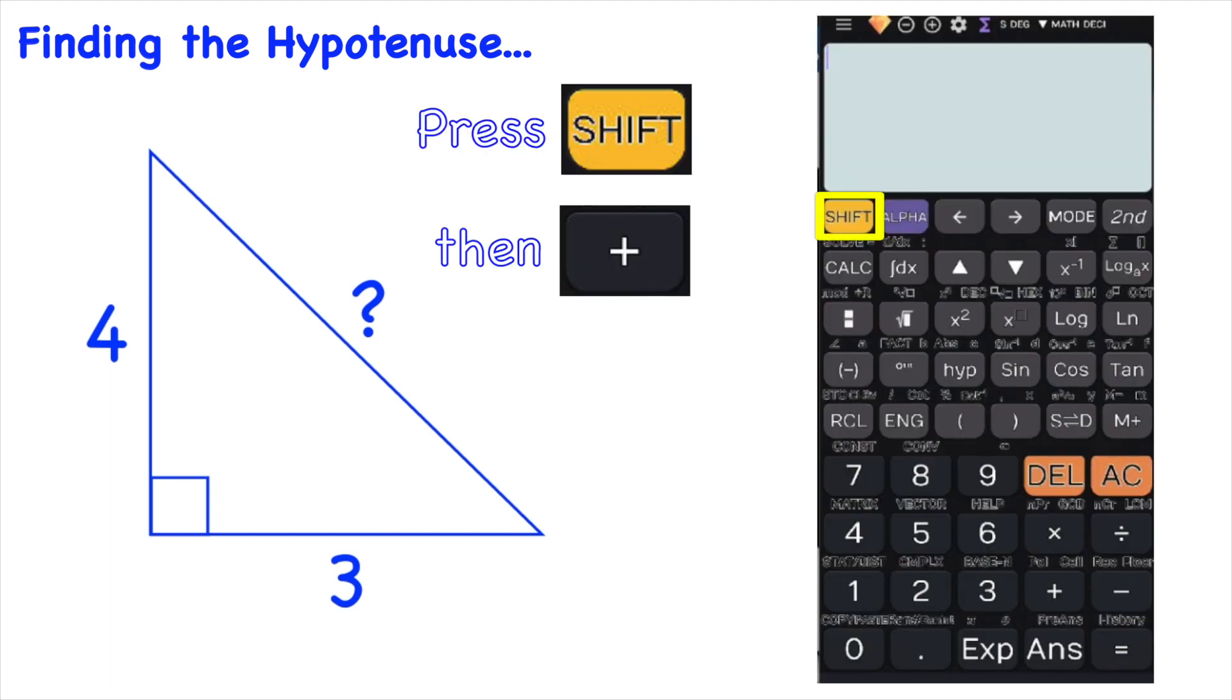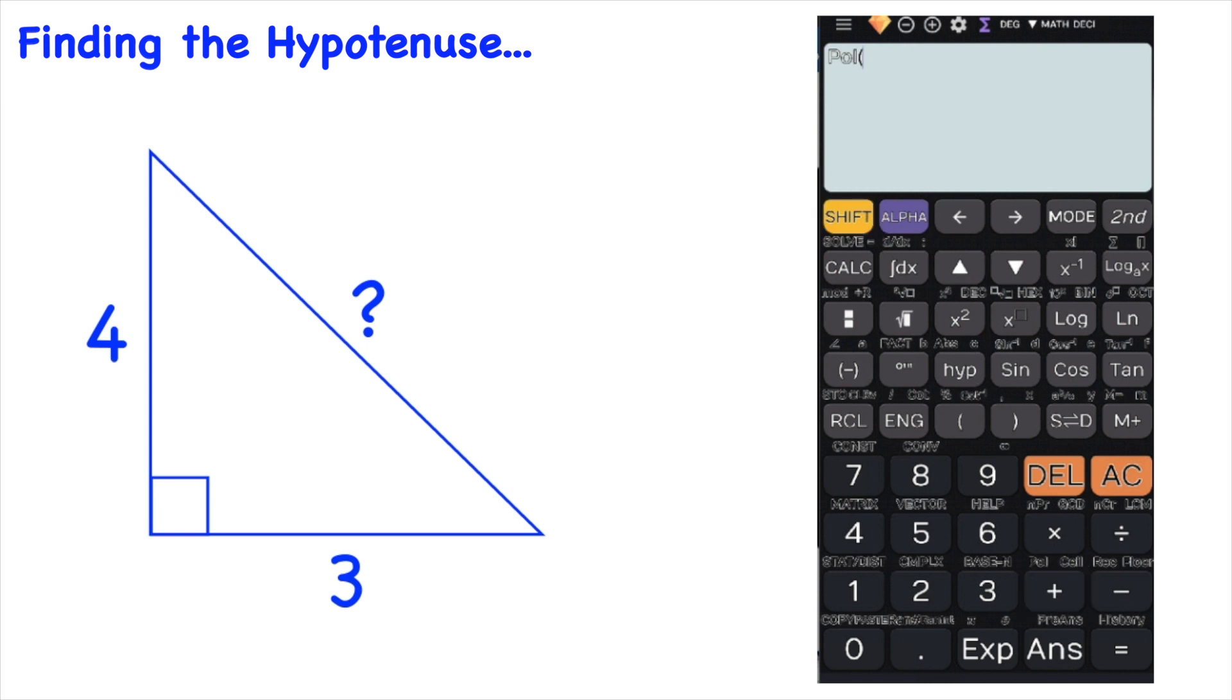You press shift and the plus button for add key. Press that and you'll see POL followed by an open bracket appear on the screen. That POL stands for polar coordinates which means that the answer you will get will be a set of polar coordinates which consists of a length and an angle.